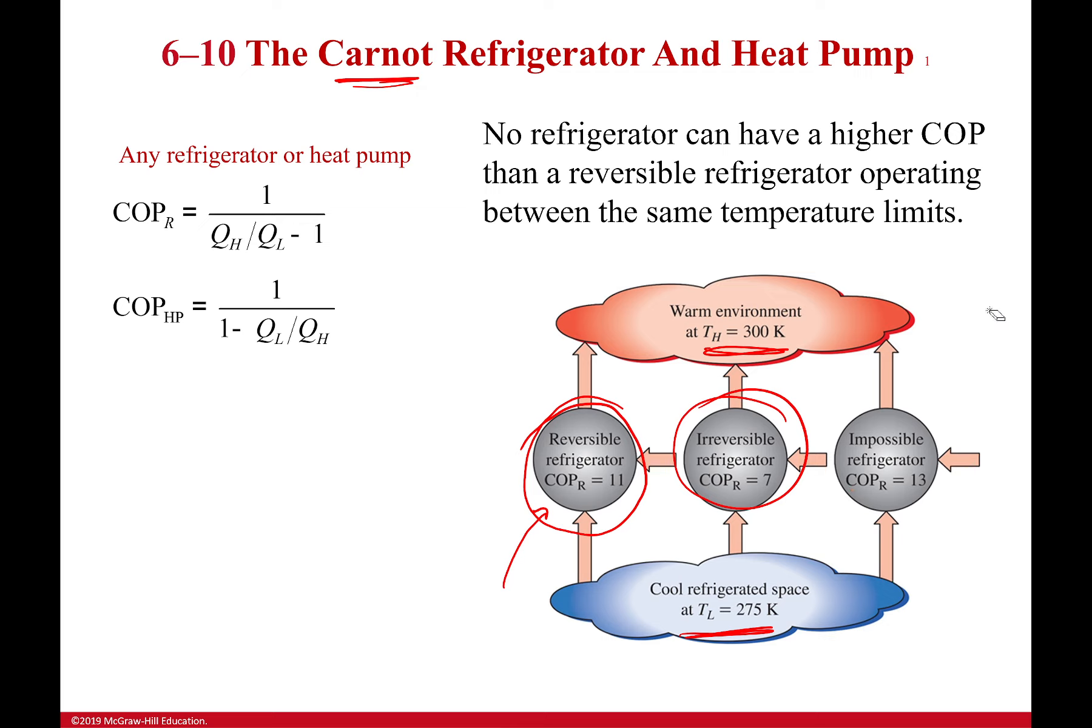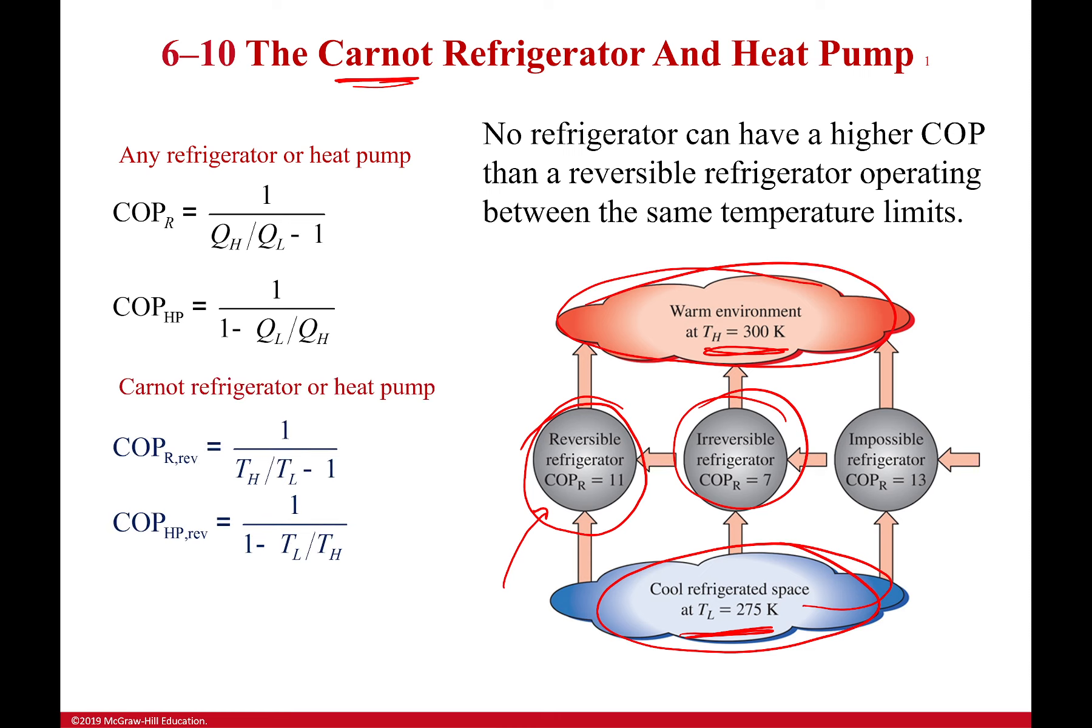This is only when I have the same cold space and the same hot space. If I change those values, the numbers change. Just like with a heat engine, we can replace all of our heats with absolute temperatures. You see this ratio right here, it's inverted but the same ratio for both of those, one for a refrigerator, one for a heat pump.